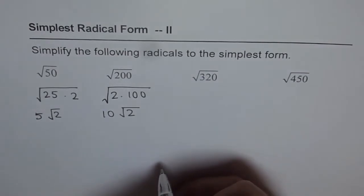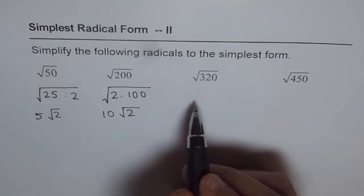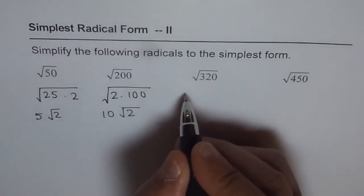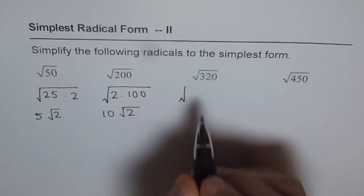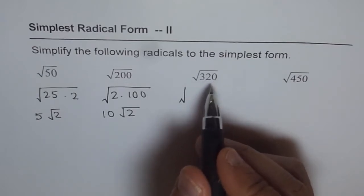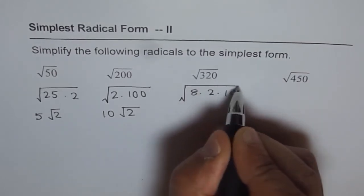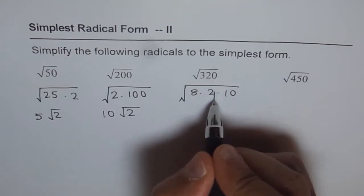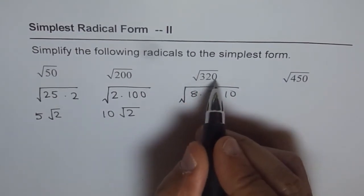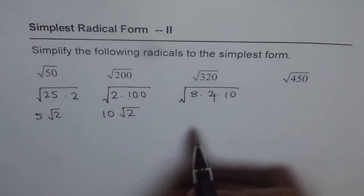How about 320? Now, it's very difficult to guess what two numbers should we take so that one of them is a perfect square. So in that case, what we can do is 320. 8 times 4 is 32 and times 10 is 320. So let's write down as 8 times 4 times 10. Well, it doesn't really serve our purpose. None of them is a perfect square.